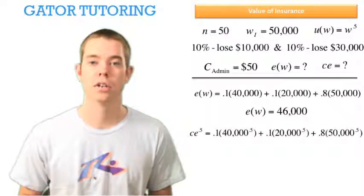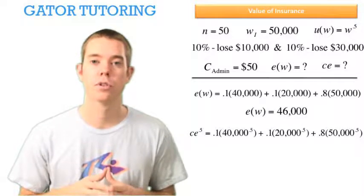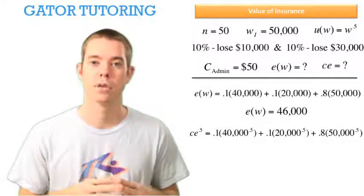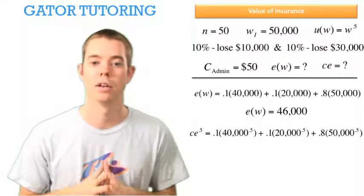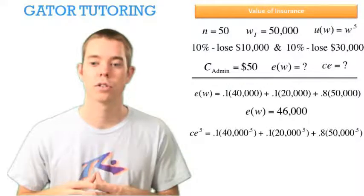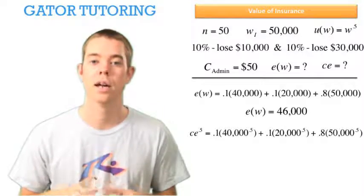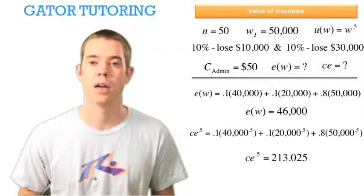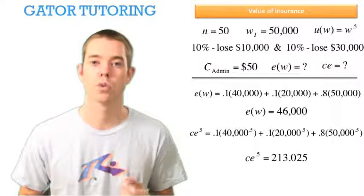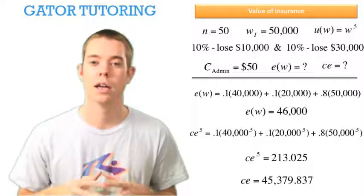To find the certainty equivalent, we go back to our utility function, which was W raised to 0.5. So the certainty equivalent raised to 0.5 equals: 10% of the time we end up with $40,000, so $40,000 raised to 0.5 multiplied by 10%; 10% of the time we end up at $20,000, so $20,000 raised to 0.5 multiplied by 10%; and 80% of the time we end up at $50,000, so $50,000 raised to 0.5 multiplied by 80%. We find that the square root of the certainty equivalent equals 213.025, so squaring both sides, the certainty equivalent is $45,379.837.